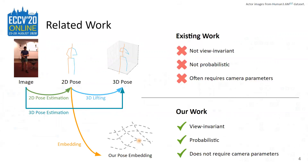In comparison, we directly predict view-invariant probabilistic pose embeddings from 2D poses. By learning view-invariant embeddings, we can leverage this property in Euclidean space for downstream tasks across views, whereas 3D poses require rigid alignment between pose pairs. The probabilistic nature of our embedding captures input ambiguity, and can describe the confidence that two 2D poses are projected from similar 3D poses. Our model does not require camera parameters.